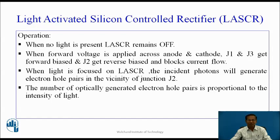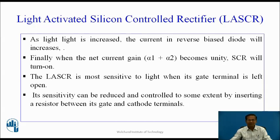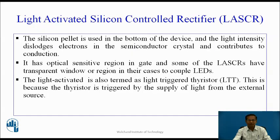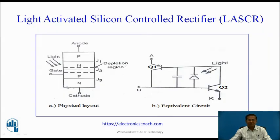When light is focused on LASCR, the incident photons will generate electron-hole pairs in the vicinity of junction J2. The number of optically generated hole pairs is proportional to the intensity of light. As light is increased, the current in the reverse biased diode will increase. This diode current acts as a base current for transistor Q2, so IC2 flows through Q2, and IC2 is equal to β2 into IB2. This IC2 acts as a base current of Q1.